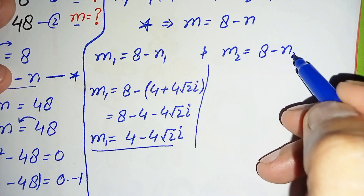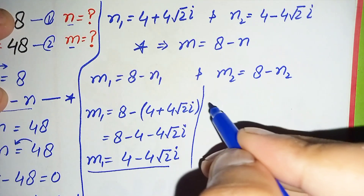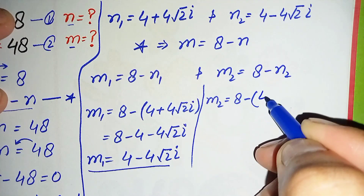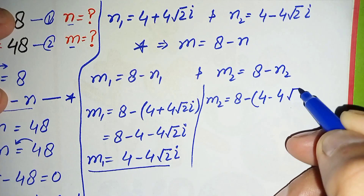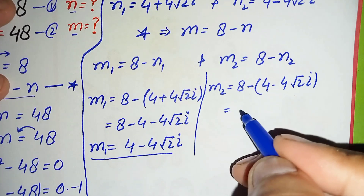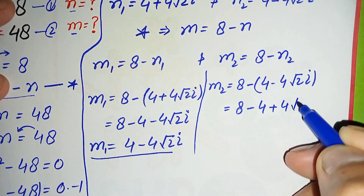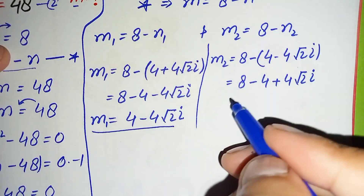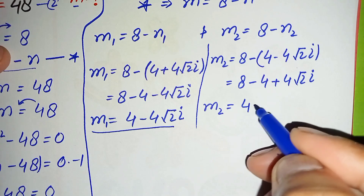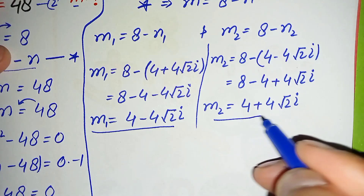For m2, we use n2 equals 4 minus 4 root 2 iota. So m2 equals 8 minus the quantity 4 minus 4 root 2 iota. Distributing the negative sign: 8 minus 4 plus 4 root 2 iota, so m2 equals 4 plus 4 root 2 iota.